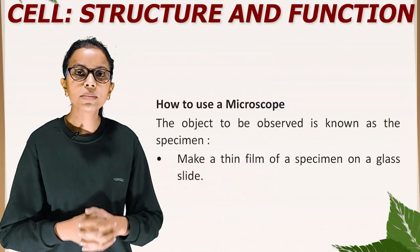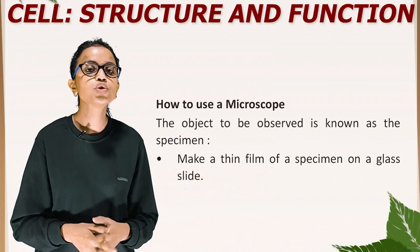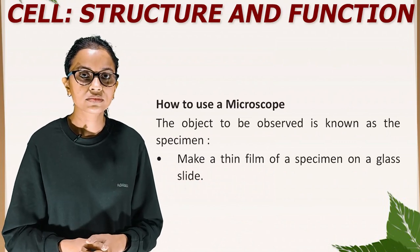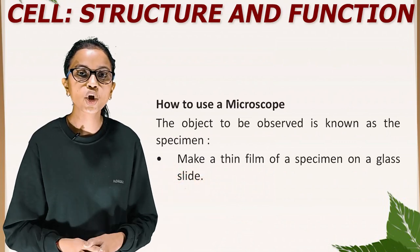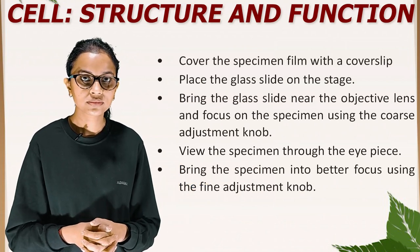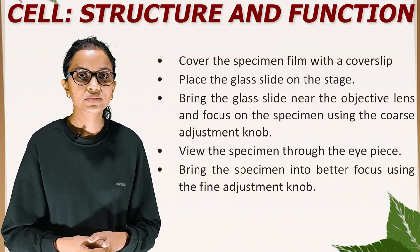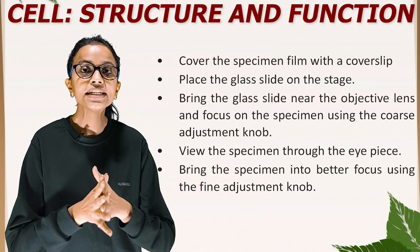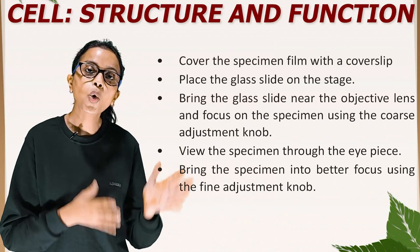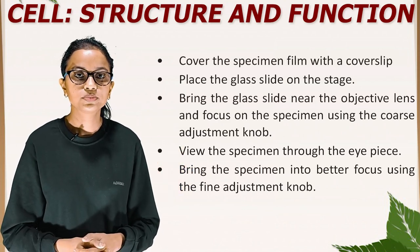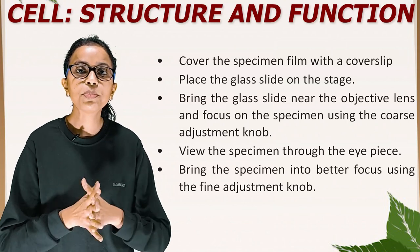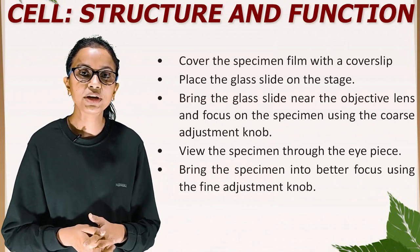How to use a microscope. The object to be observed is known as the specimen. Make a thin film of the specimen on a glass slide. Cover the specimen film with a cover slip. Place the glass slide on the stage. Bring the glass slide near the objective lens and focus on the specimen using the coarse adjustment knob. View the specimen through the eyepiece. Bring the specimen into better focus using the fine adjustment knob.